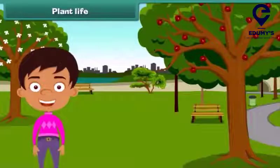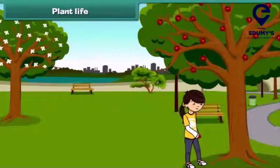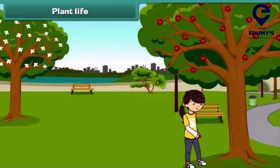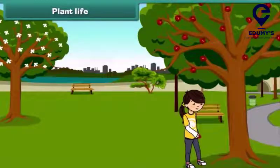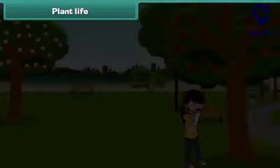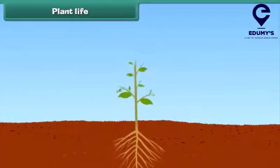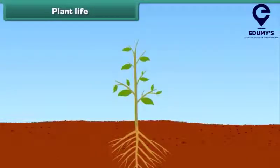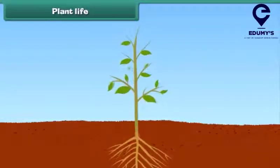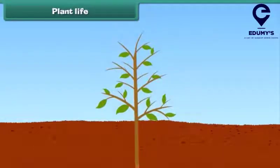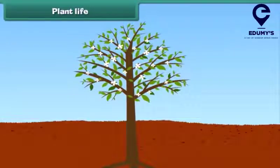Hello friends, I am Sam. Do you know that plants are also our friends? They give us food and many other useful things. Besides this, they also give us shade. Plants are also living things like us — they need food and water to live and grow, and they also have the ability to grow and become tall like us.